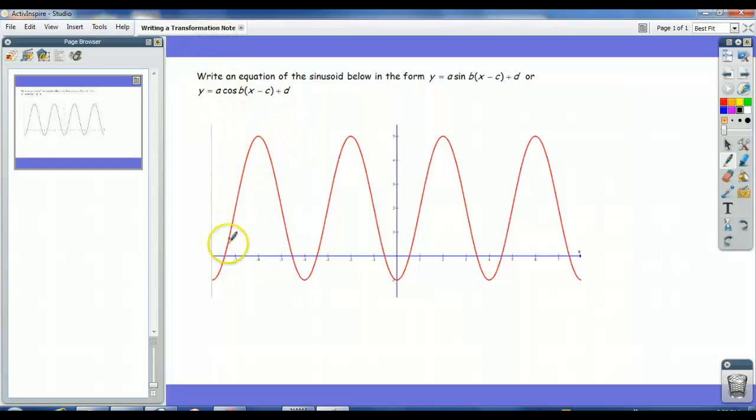We're going to talk about writing an equation of a sinusoid if you're given the graph. We need to write it in either the form y = a sin(bx - c) + d or y = a cos(bx - c) + d. What we're looking at is a sinusoid, and at this point you might want to scan the picture and find either the sine or the cosine shape.